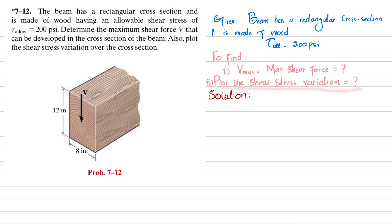Let's start with the solution. The shearing stress formula is τ = VQ / (It). For our problem, τ_allowable = V_max · Q / (I · t). We do not yet have Q, V, or I — only the thickness t, which is 8 inches. So first we will find I, the section property.